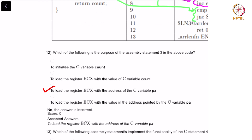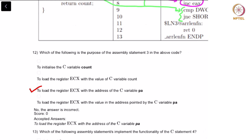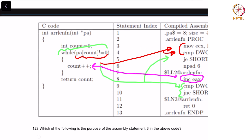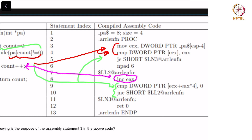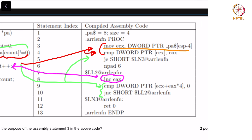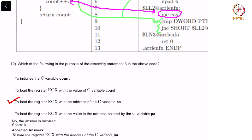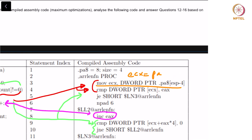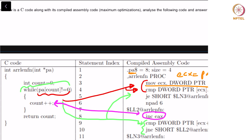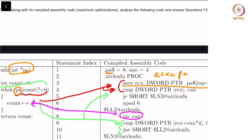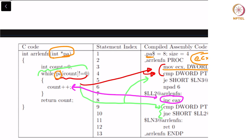Moving on to question number 12: which of the following is the purpose of assembly statement 3 in the above code? When you look at this statement, ECX is being fed the value of the variable PA. Basically, ECX is being loaded with the address of the C variable PA. Because the C variable is a pointer — star PA — you need to pass the address that is the first location of this array PA to register ECX. Hence option C is the correct answer for question 12.